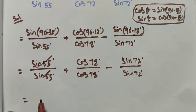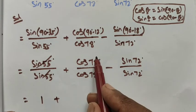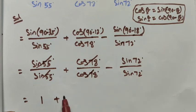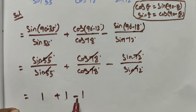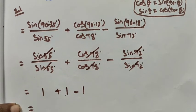Sin 55, sin 55 cancelled, so we get 1. Plus cos 78, cos 78 cancelled, so we get 1. Minus sin 72, sin 72 cancelled, so we get 1. So 1 plus 1 minus 1 is cancelled, so we get the value as 1.